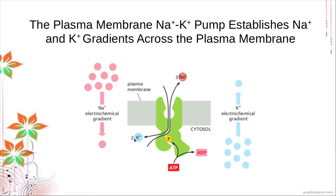We also have the plasma membrane sodium-potassium pump that establishes your sodium and potassium gradients. This is another ATP-driven pump and it is also an antiporter. Although it's an antiporter, it is not a coupled transporter because both solutes are moving against the concentration gradient and it is powered by ATP. This sodium-potassium pump moves potassium to the inside of the cell and transports sodium to the outside.